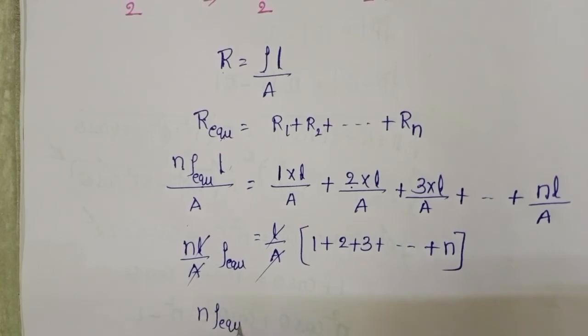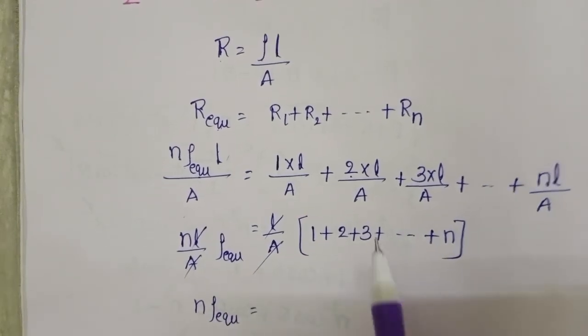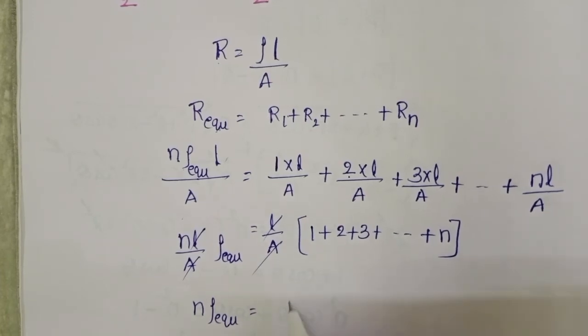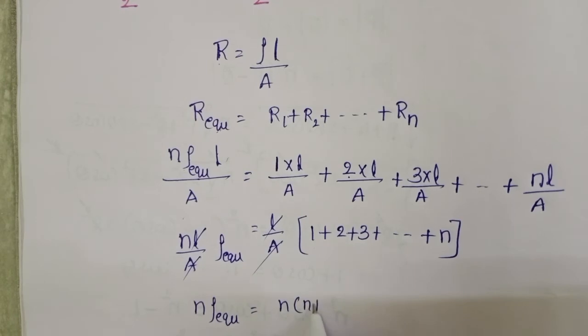And now N into Rho equivalent is equals to, here sum of N natural numbers. Sum of N natural numbers is equals to N into N plus 1 by 2.